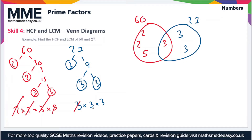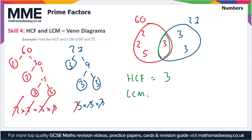The other two 3s we'll put in the circle for 27 and cross them off. To find the highest common factor, we multiply all the numbers in the intersection together. In this case it's just 3, so the highest common factor is 3.